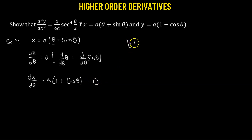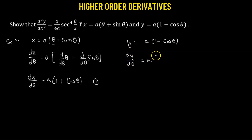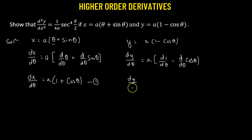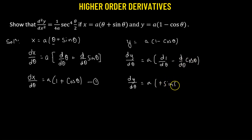Now using y = a(1 − cosθ), we take the derivative with respect to θ. So dy/dθ = a times (derivative of 1 is 0, minus derivative of cosθ which is −sinθ). This gives dy/dθ = a·sinθ. Label this as equation number 2.